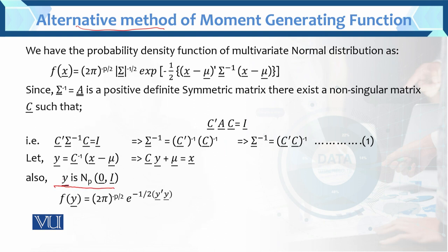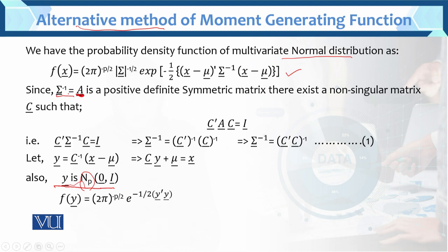So y tends to normal distribution with mean zero and variance identity. We have the probability distribution function of multivariate normal distribution. We know this is the probability density function of the multivariate normal. Since sigma inverse equals A, and sigma inverse equals A is a positive definite symmetric matrix. This is the property of the positive definite symmetric matrix.